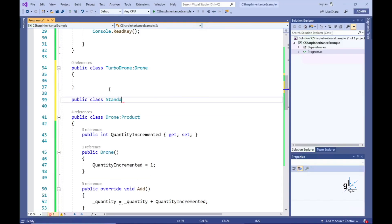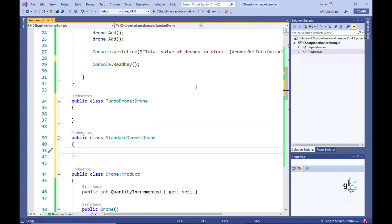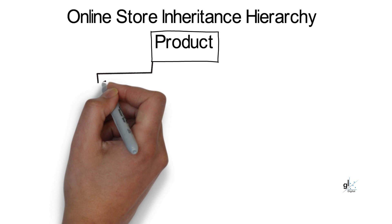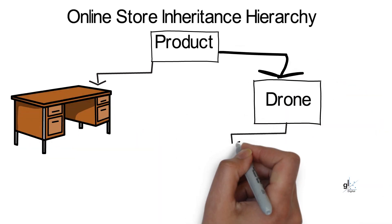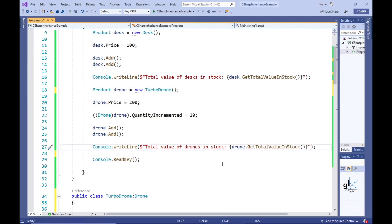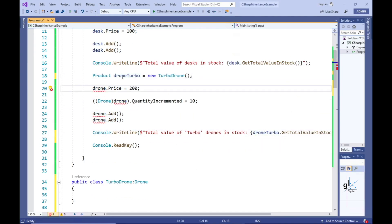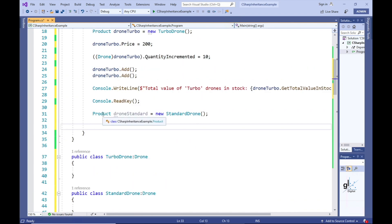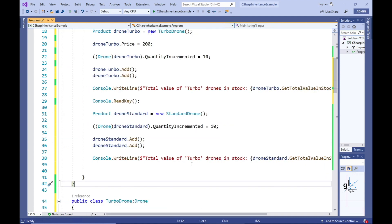So let's implement inheritance for the standard Drone class. Now let's look at a pictorial representation of the inheritance hierarchy for the classes in our online store application. A standard drone is a drone, and a drone is a product, so a standard drone is a product. A TurboDrone is a drone and therefore a product. A desk is a product. Conversely, a product isn't always a drone — it can also be a desk. A drone isn't always a TurboDrone — it can also be a standard drone. Let's implement code in the main method to instantiate a TurboDrone and a standard drone and write the total value of each to the console screen.